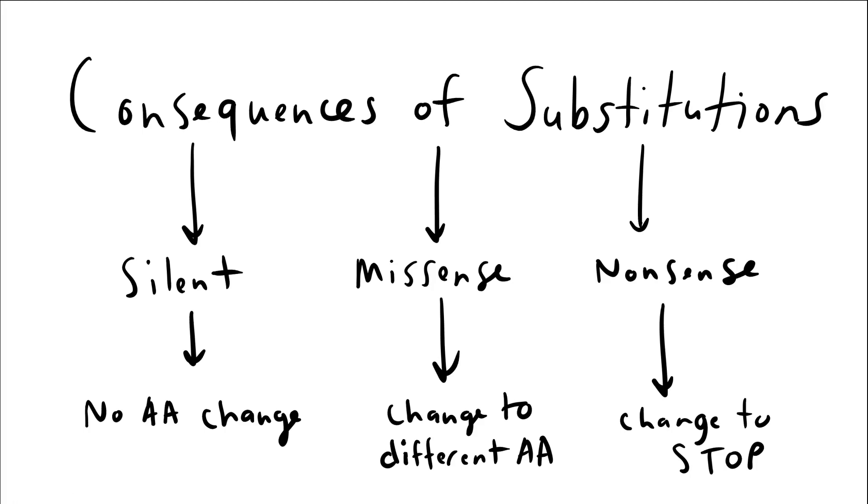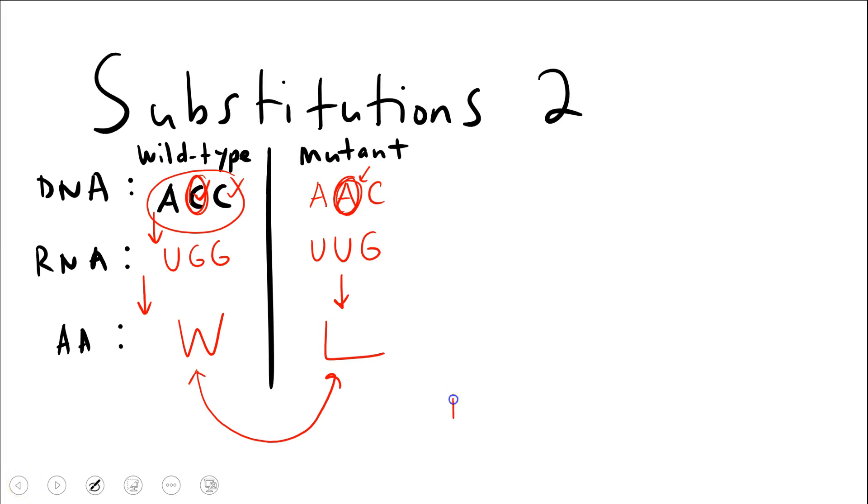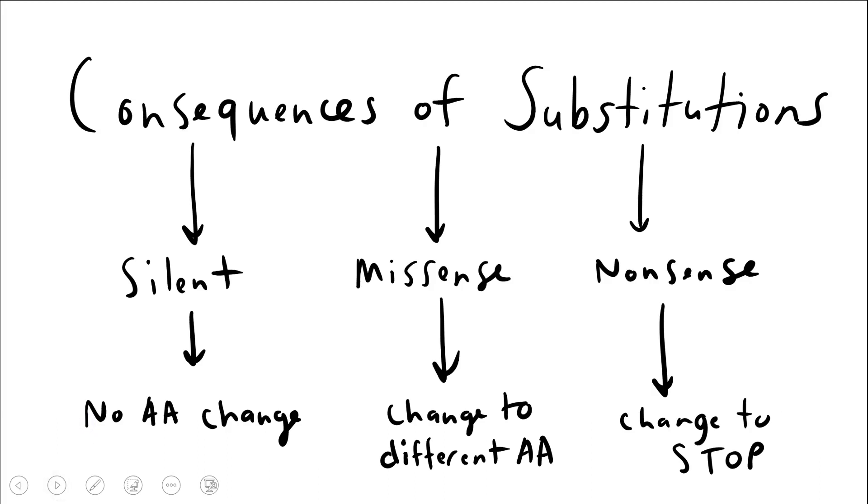I want to break down substitution mutations a little further and describe some of the consequences of those substitutions. So a substitution mutation, all of which we've described so far as point mutations. Point mutations, in the most simplified cases, one nucleotide changes or mutates. So we're looking at substitution point mutations here, changing one single letter and having consequences downstream.